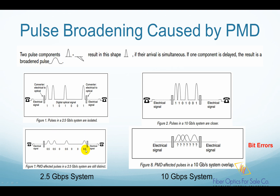However, in the 10 Gbps system, since these pulses are much closer in time, the pulses are broadened and interfere with each other so badly that they can no longer be recognized as the original digits. They are called bit errors. So PMD can cause so many bit errors that the system's efficiency is severely affected.